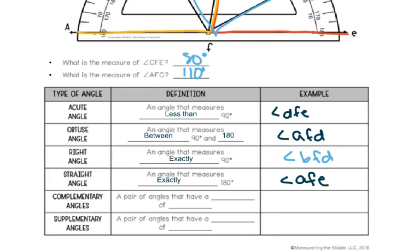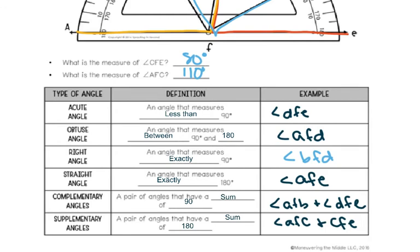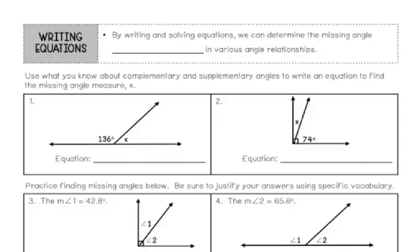Next, we have complementary and supplementary, which we have already talked about. Complementary is a pair of angles that have a sum of 90 degrees, and supplementary are a pair of angles that have a sum of 180 degrees. In our diagram, we have an example of complementary angles with angle AFB and DFE, and supplementary with AFC and CFE.